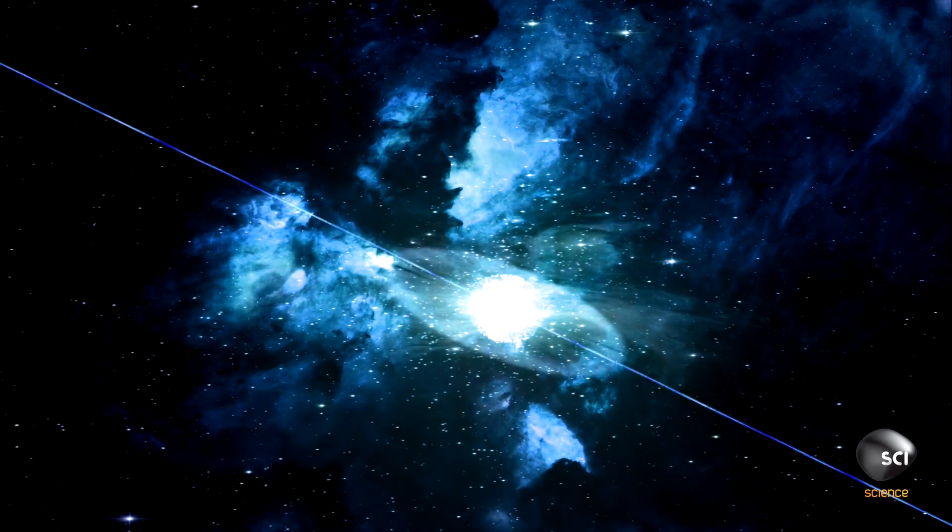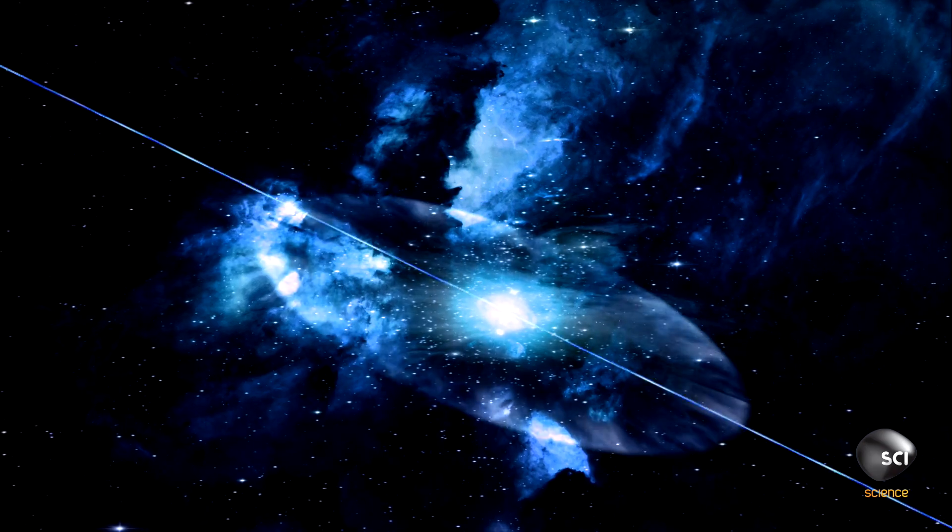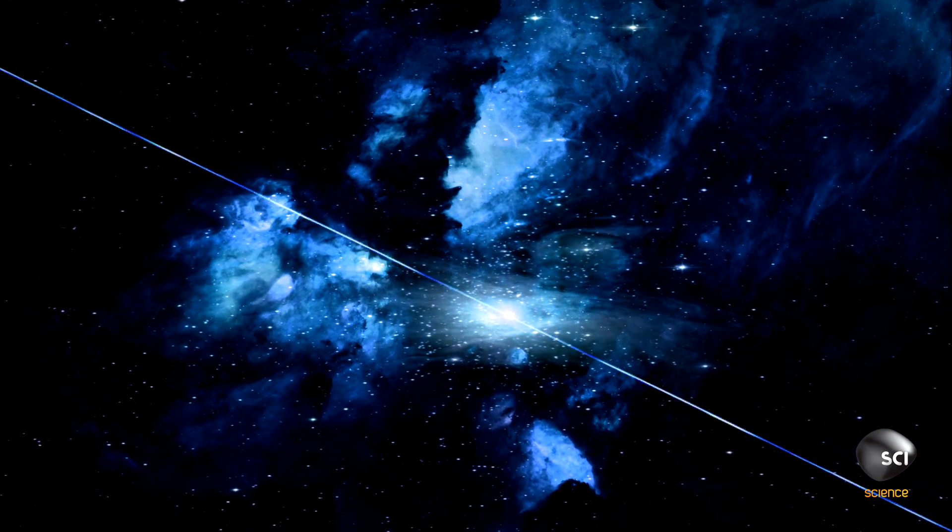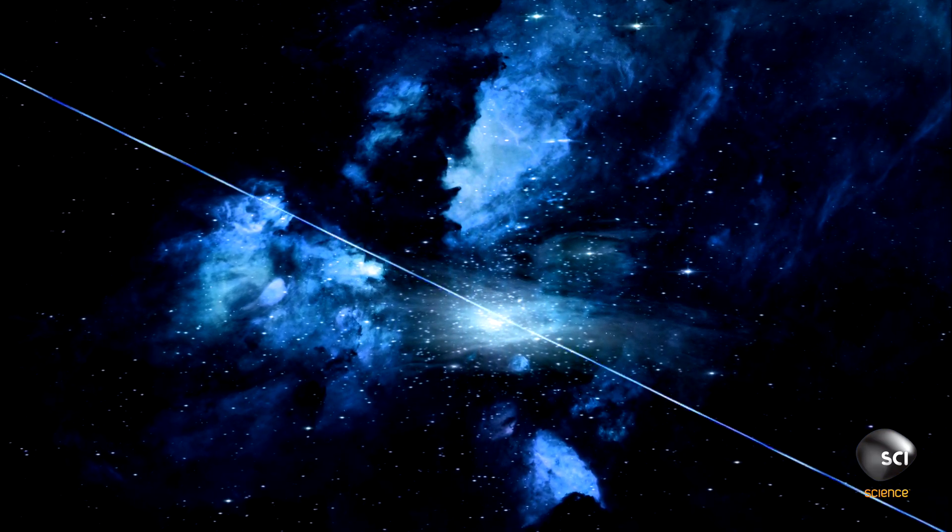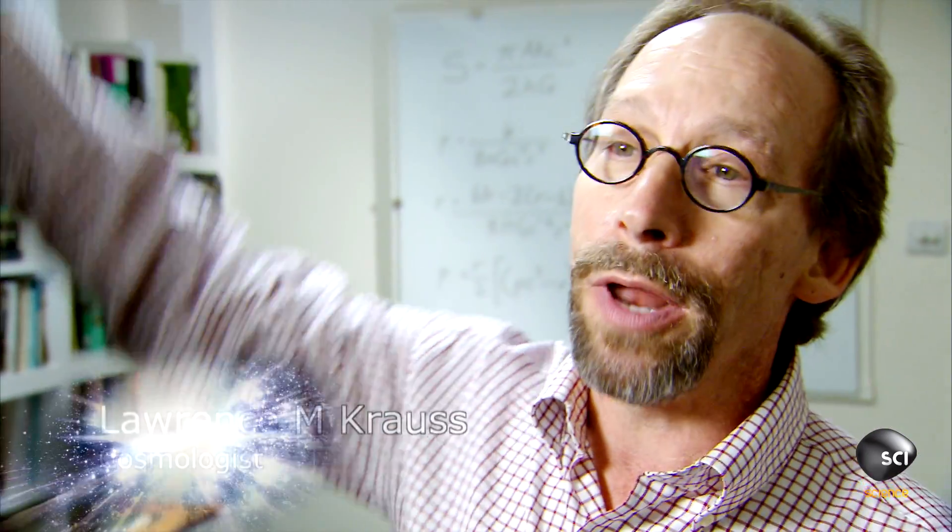Most black holes start life with the death of a giant star. When the star collapses, it all gets blown out in the most violent fireworks in the universe, a supernova, the explosion of a star which shines briefly with the brightness of 10 billion stars.